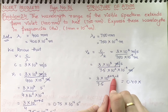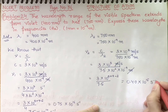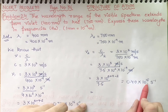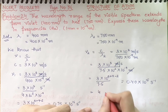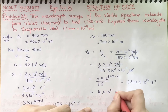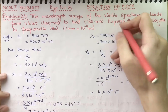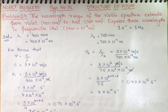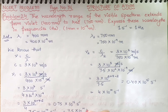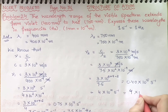The power becomes 8 plus 9 minus 2, which is 10 raised to power 15 per second. Carrying one factor of 10 gives 4 into 10 raised to power 14 per second. Since one per second equals one hertz, nu one equals 7.5 into 10 raised to power 14 hertz, and nu two equals 4 into 10 raised to power 14 hertz.